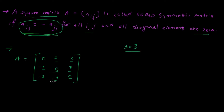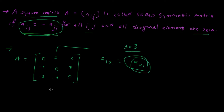Now let me explain this part. This is the first row, second column element, a_12. If a_ij equals minus a_ji, then a_12 must equal minus a_21. So a_21 is the element at the second row, first column — and that element is minus one, confirming the relationship between a_12 and a_21.